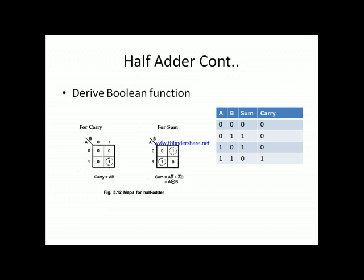Using the two-variable K-map for the sum output variable, two minterms give logic 1: combination 01 and combination 10. We plot those values on the K-map. Similarly, we plot values for the carry output variable. For carry, all combinations give output zero except one combination — the 11 combination gives 1.